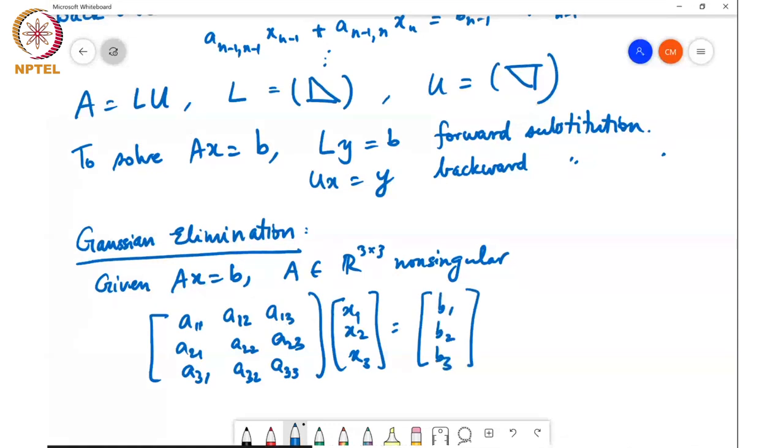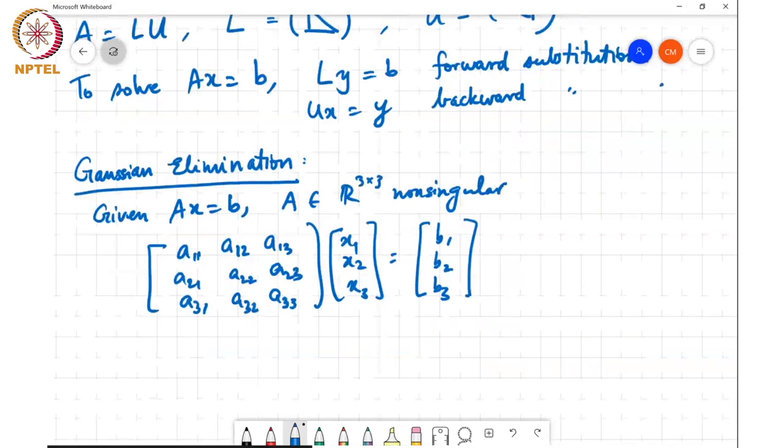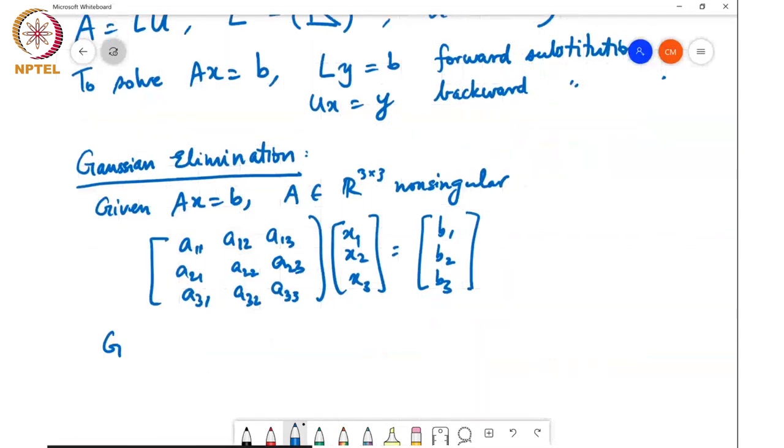Then what I can do is I can use Gaussian elimination to reduce this to the form a11 a12 a13 0 a22 dash a23 dash and 0 0 a33 say double dash times x1 x2 x3 is equal to I have to do the same Gaussian elimination operations on the right side so I'll have b1 b2 dash and b3 double dash. Okay and then now I can this is of the form u times x equals b and backward substitution works.